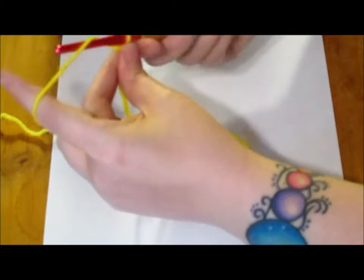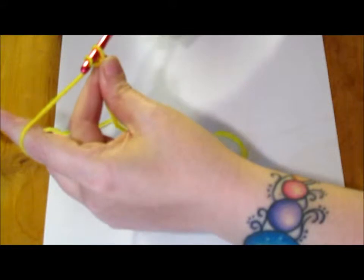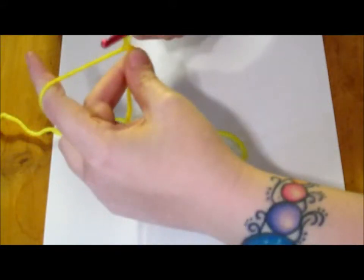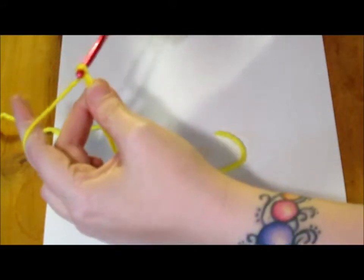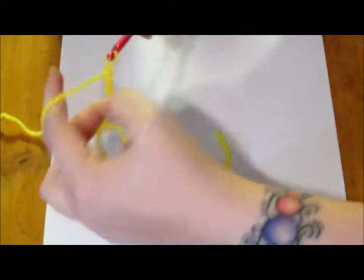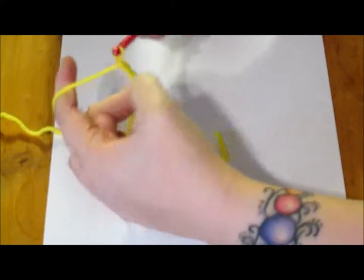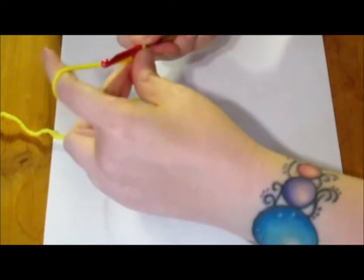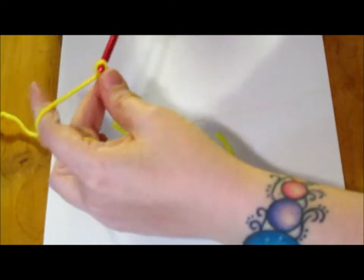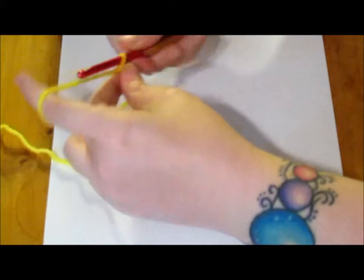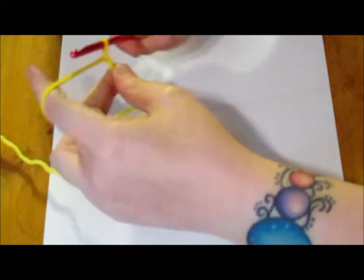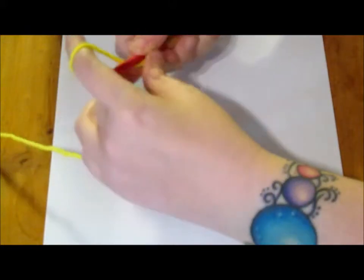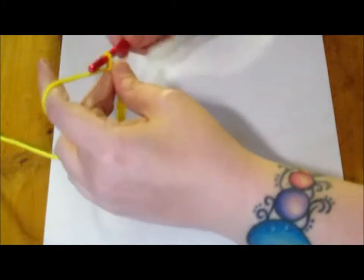Take your hook, rotate it behind that working yarn, grab it, and pull it through the loop. You're just going to do this several times until you get the length that you want. This is called making the chain. Now, you're going to need to slide those fingers holding it up as you make the chain. Otherwise, it gets a little hard to control. So, I'm just going to do a couple of chains so that I can show you a few of the basic stitches.